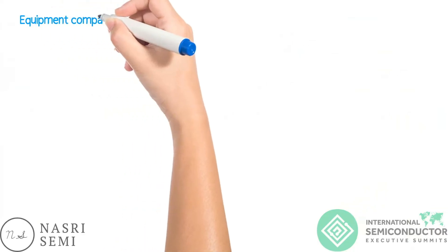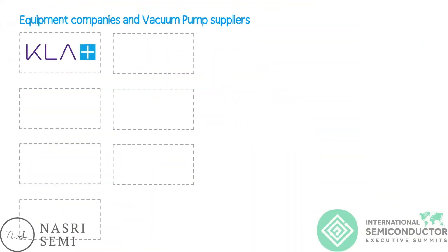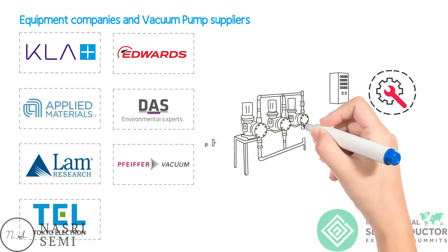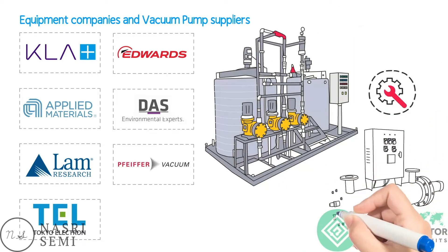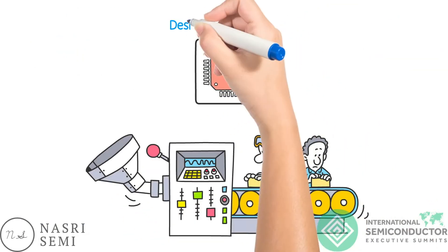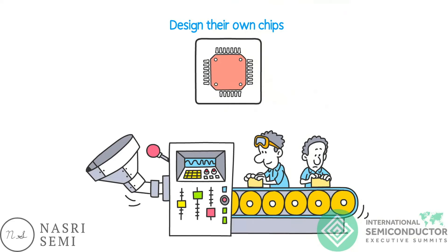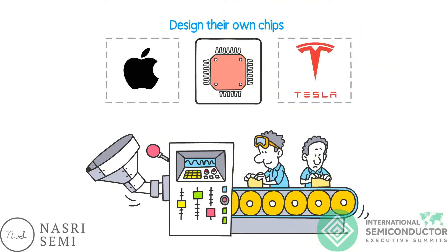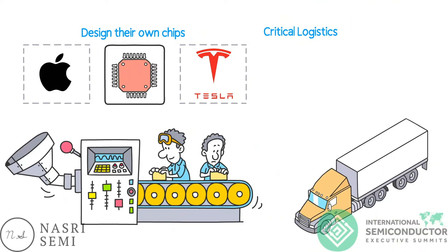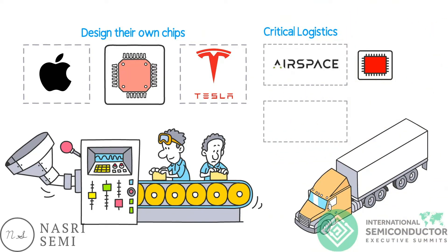Equipment companies and vacuum pump suppliers such as KLA, Applied Materials, LAM Research, Tokyo Electron, and also Edwards Vacuum, DAS Environmental Systems and Pfeiffer also provide maintenance, repair and other services to the semiconductor industry. In addition, consumer-facing companies that design their own chips are world-recognized brands such as Apple, Tesla and many more. Critical logistics also plays a huge role in supporting the ecosystem, and there are companies such as Airspace and CNW to support it.